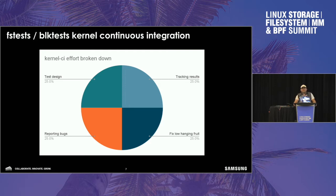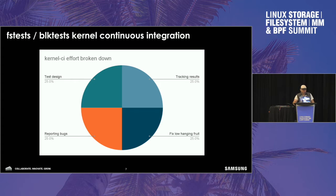If there's any takeaway, I'd really like you to think about this — the time and involvement for testing really needs to be divided properly if we want to take this seriously. About 25% of the time should be dedicated towards test design, 25% tracking results, 25% for reporting bugs, and 25% for fixing low-hanging fruit. We're pretty good at test design, and that's it, really.